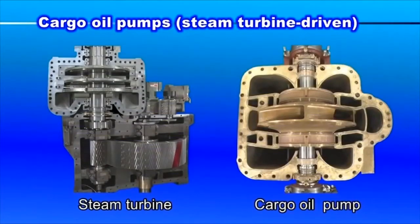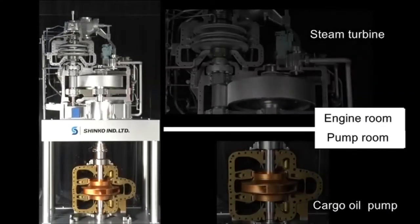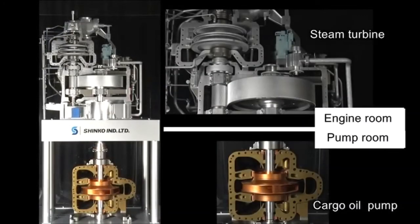Steam turbine driven cargo oil pumps are used on crude oil tankers. With its steam turbine side placed in the engine room, the cargo oil pump proper is installed in the pump room via seals for the gear coupling and penetrating parts. This isolation is necessary from the viewpoint of hazardous material handling.